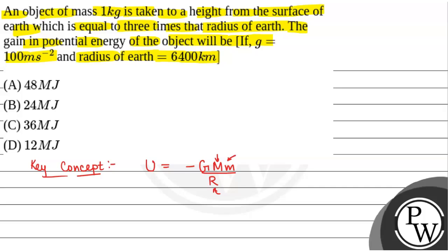We have been given that initially the object was at the surface of the earth. So the initial potential energy Ui will be equal to -GMm/R, because at that time the distance from the center of the earth will be equal to the radius of the earth.